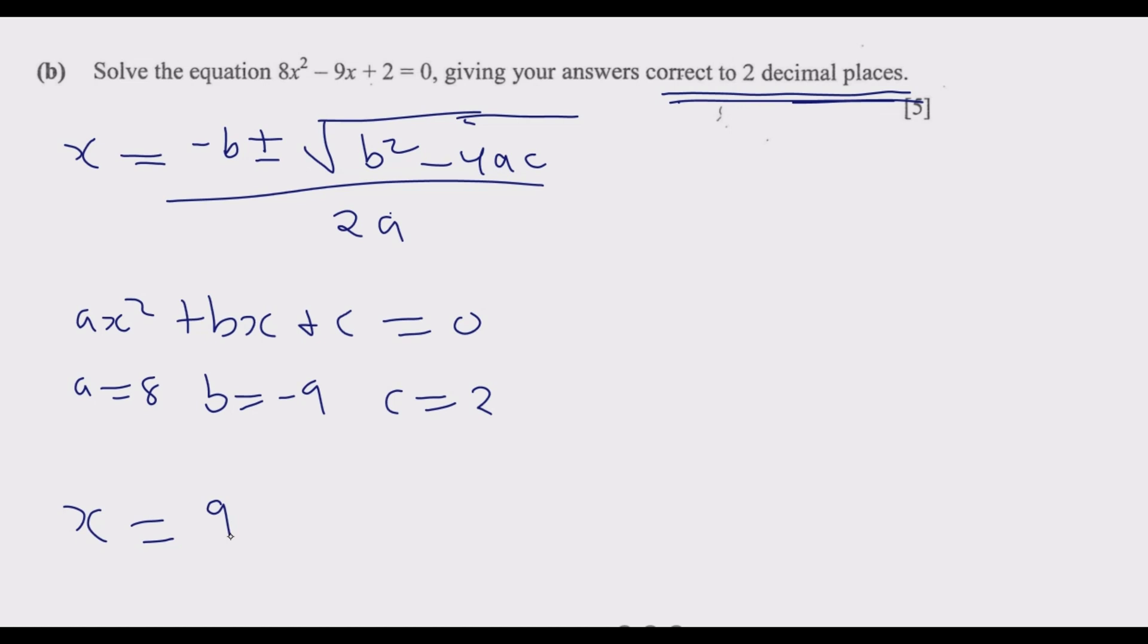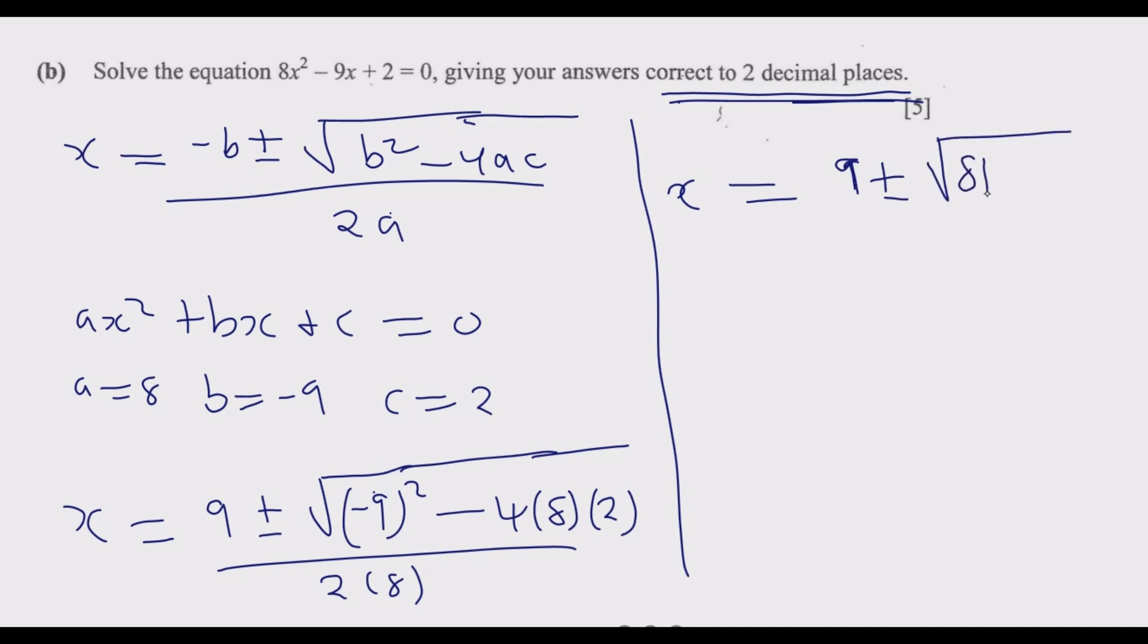x = (9 ± √(81 - 64)) / 16. We have 9 plus or minus, then 9² = 81, 4 times 8 times 2 = 64, over 2 times 8 which is 16.